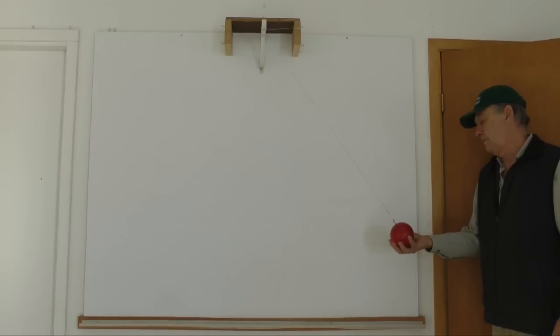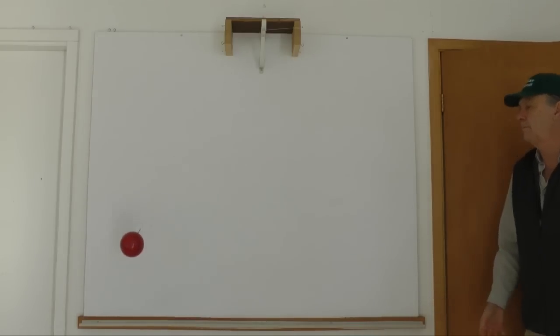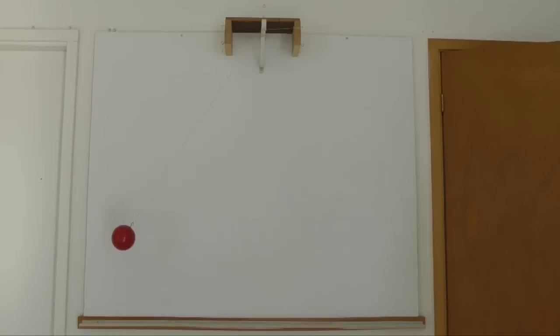When I release the bob, another energy conversion takes place. The gravitational potential energy is transforming to kinetic energy, energy of motion. As the pendulum swings down, gravitational potential energy is being converted to kinetic energy. At the bottom of the swing, all of the gravitational potential energy is gone, fully converted to kinetic energy. The bob is moving at its maximum velocity.